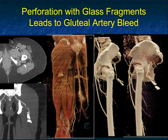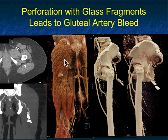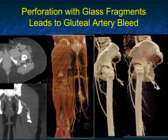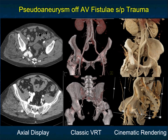Another patient — this patient had trauma. This opaque density is a piece of glass; you can see it in the gluteal muscle. You also see the active bleeding. There it is when I show you the muscle on the cinematic rendering. Looking at the patient's vascular map, we can see the multiple fragments of glass and the patient's active bleeding, all very nicely shown, giving you a global perspective of what's going on.